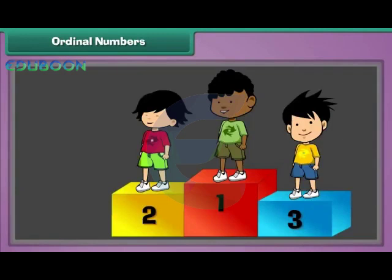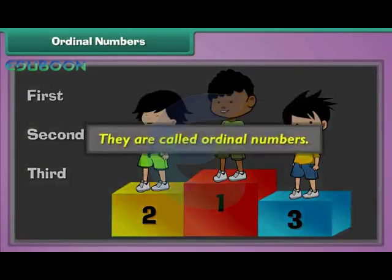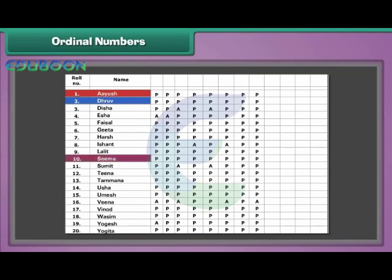Ordinal numbers. Words like first, second, third, and so on are used to indicate positions, and such numbers are called ordinal numbers. For example, there are twenty students in a class. Ayush's name is written first in the attendance register, Dhruv's name comes second, and Seema's name is at the tenth position.